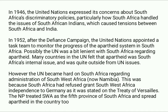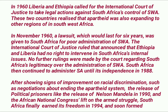However, the UN became harder on South Africa regarding its administration of Southwest Africa, now Namibia. This was because South Africa had refused to grant Southwest Africa independence as stated in the Treaty of Versailles. The National Party treated SWA as a province of South Africa and spread apartheid there too. In 1960, Liberia and Ethiopia called on the International Court of Justice to take legal action against South Africa's control of SWA, as these two countries realized that apartheid was expanding into Southwest Africa.